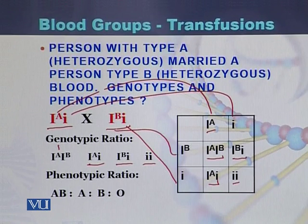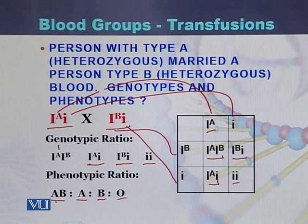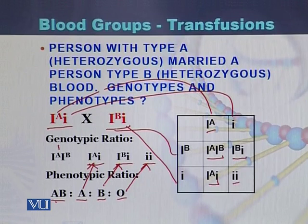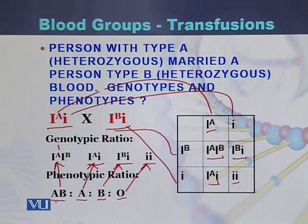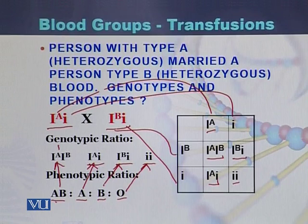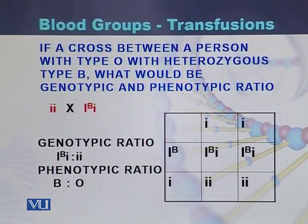Based on the phenotypic ratio, the genotype I^A I^B gives blood group AB, I^A I gives blood group A, I^B I gives blood group B, and II gives blood group O. So if a person heterozygous for blood group A marries a person heterozygous for blood group B, the phenotypic ratio will be 1:1:1:1 for blood groups AB, A, B, and O.